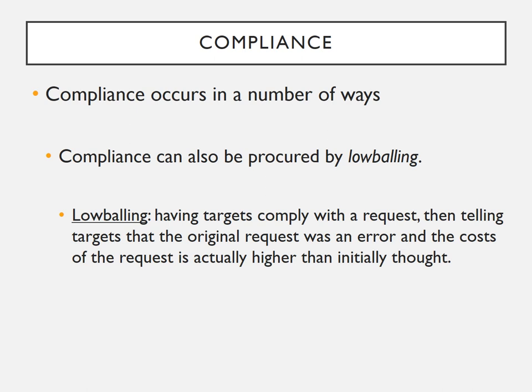Compliance can also be procured through lowballing, which consists of first having targets comply with a request, then telling them that the original cost was an error and the actual cost is higher. Believe it or not, people are more likely to comply with the now-costlier request than if you had just asked them to comply with the higher cost directly. Crooked used-car salespeople often use this technique — they get buyers to agree to a price, go to the back office, then return claiming there was an error and the price is somewhat higher. In most cases, people still agree to buy, making more money for the salesperson.